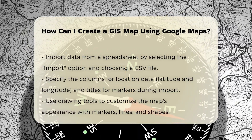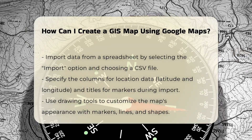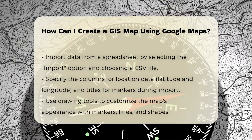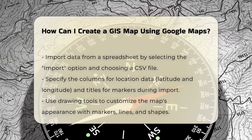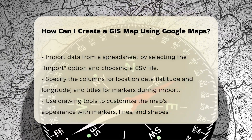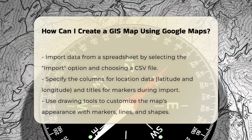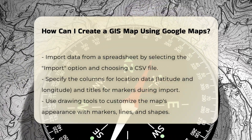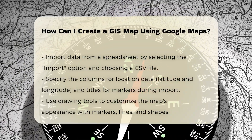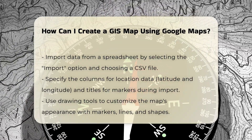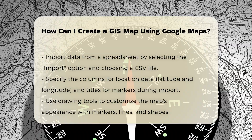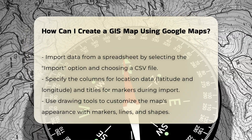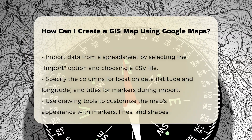Style your map. Customize the appearance of your map by using the drawing tools. You can add markers, lines, and shapes manually. For markers, use the 'Add Marker' tool and click on the map where you want the point to be. You can also adjust the color and icon style for each marker.